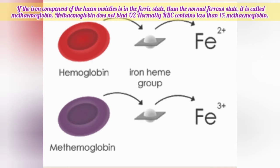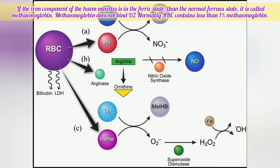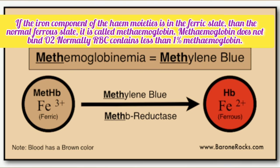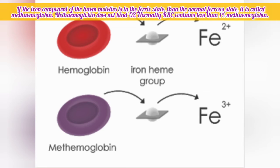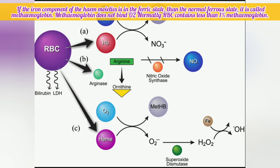Methemoglobin is a respiratory pigment. It contains an iron pigment called hematin. The iron occurs in the ferric state, which is why it is called methemoglobin. It occurs in RBC cells at less than one percentage. It does not bind with oxygen, but it does help with gaseous exchange.